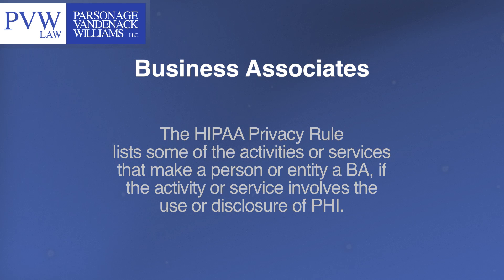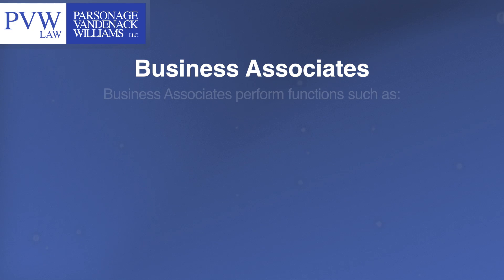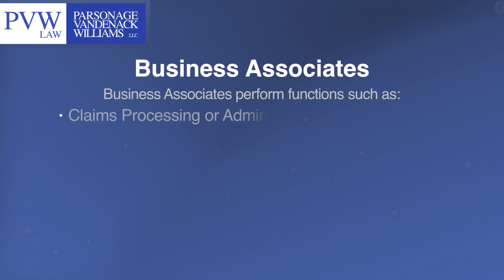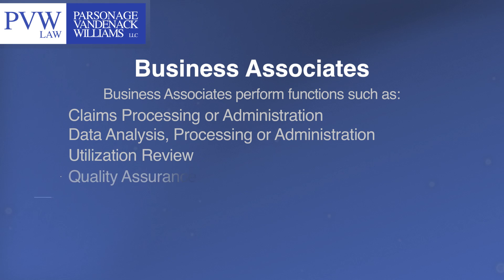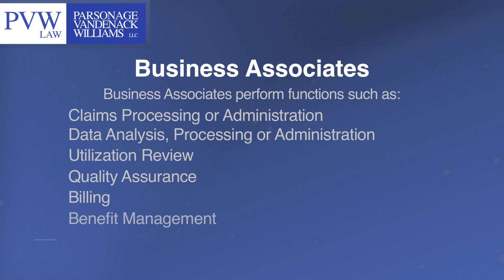The HIPAA privacy rule lists some of the activities or services that make a person or entity a business associate, if the activity or service involves the use or disclosure of protected health information. Business associates perform functions such as claims processing or administration, data analysis, processing or administration, utilization review, quality assurance, billing, benefit management, practice management, and repricing.